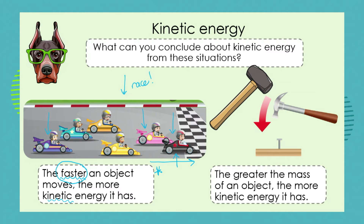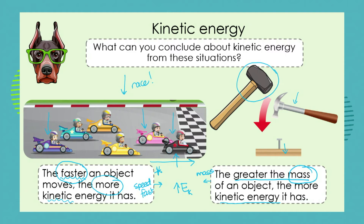So we know that the faster an object moves, the more kinetic energy it has. We also know that the greater the mass of an object, the more kinetic energy it has. So in both of these systems we're showing an increase in kinetic energy — in this case due to speed, and in this case due to mass. So if we use a normal hammer to nail in this nail into the wood, or we increase the mass of the hammer and use a big mallet, we would increase the amount of kinetic energy to drive that nail into the wood.